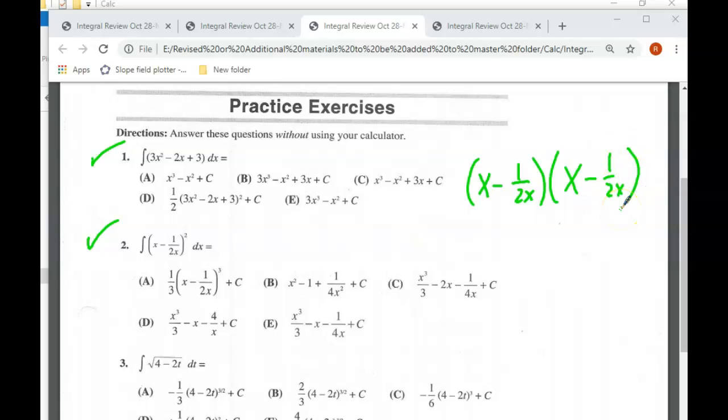What I would do is I would just actually multiply this thing out. So x minus 1 over 2x squared, let me just multiply it by itself. So we have x squared, multiply here, we end up with a half. Multiply here, we end up with another half. And if we multiply here, we end up with plus 1 over 4x squared.